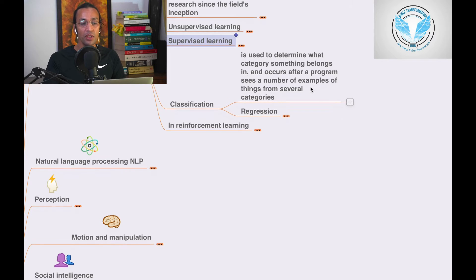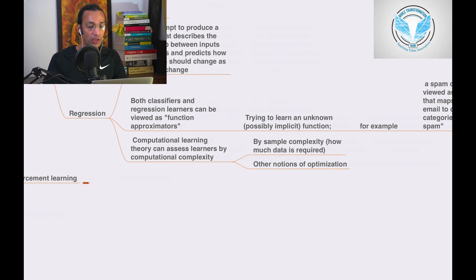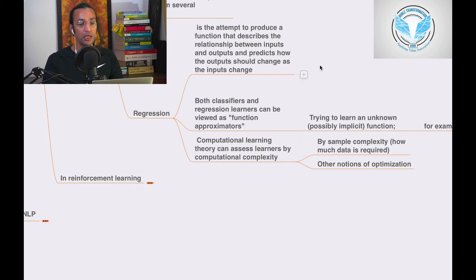Regression in machine learning is the attempt to produce a function that describes the relationship between input and outputs and predicts how the output should change as the input changes.